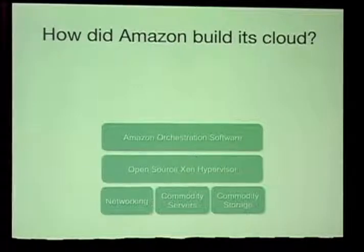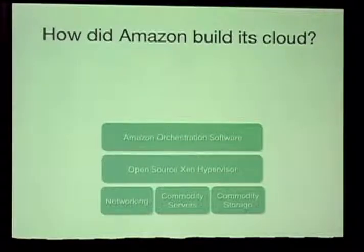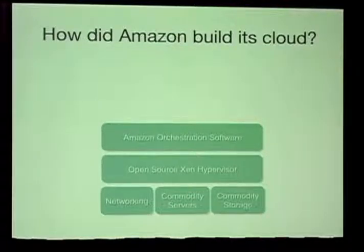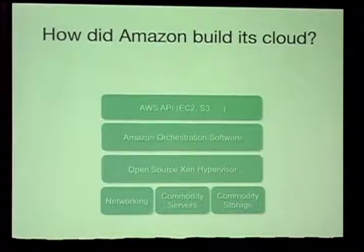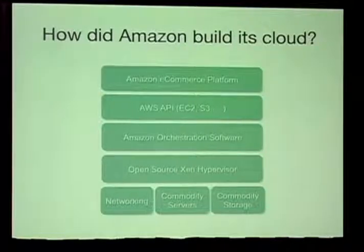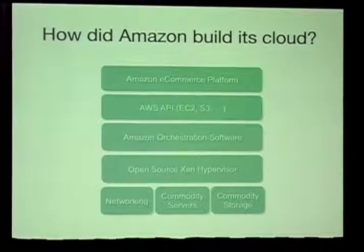Amazon has their own orchestration server — a set of services in the data center which orchestrates the hypervisor, the networking, the storage, and the servers. Then they give you a very nice API — the AWS API — to interact with their cloud. That includes EC2, which is the compute API, S3, which is the storage API, and then some way to purchase these services, a vending platform.